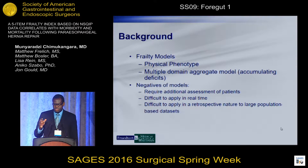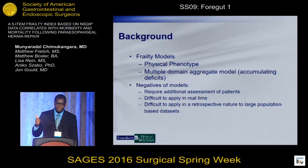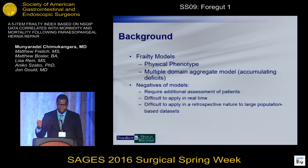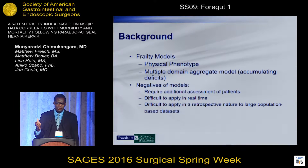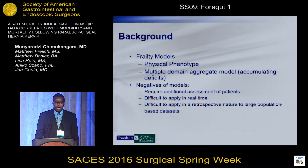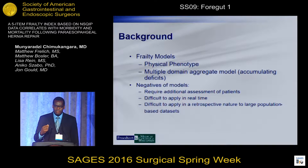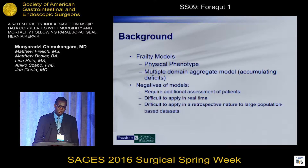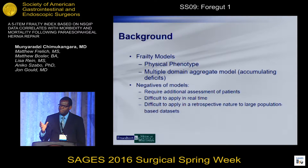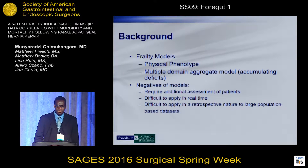Frailty has been described with different models. The two major models are the physical phenotype, which is used in geriatric medicine, looking at things such as exhaustion and weight loss. The second, used in clinical studies in surgery, has been the multi-domain aggregate model, the backbone being the Canadian Health Study-based index. However, these models are cumbersome and hard to apply in real-time situations to make patient decisions.